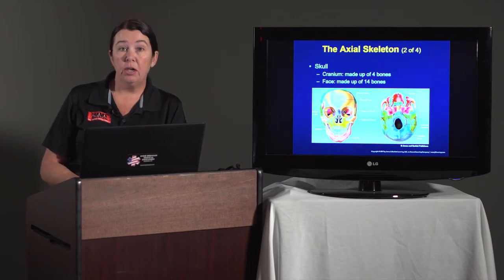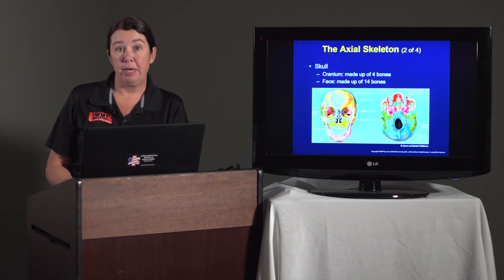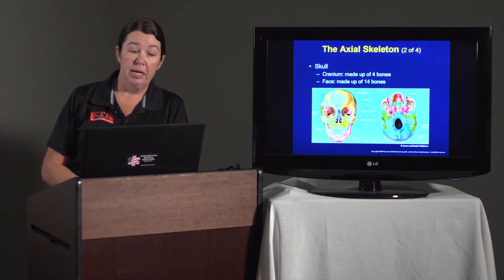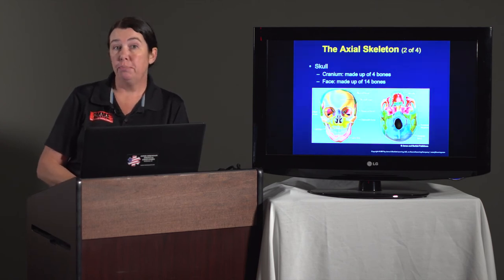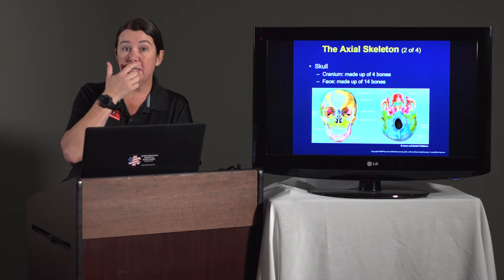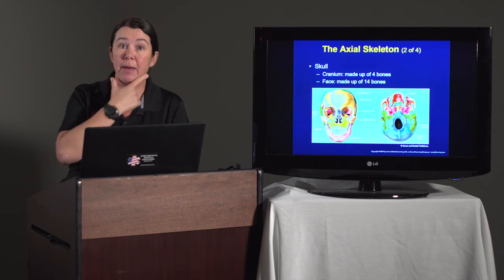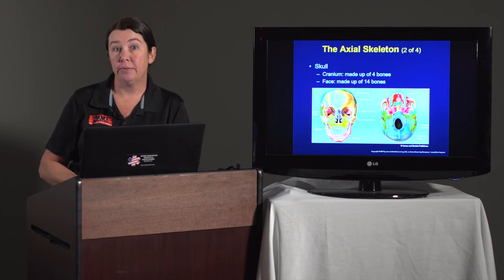The skull is made up of two portions of bones. The cranium is made up of four portions of the bone in the back of the skull, and the face is made up of 14 bones. The important bones to know in this slide are the maxilla, which is the upper jaw, and the mandible, which is the lower jaw. That's important when we get into the airway discussion.